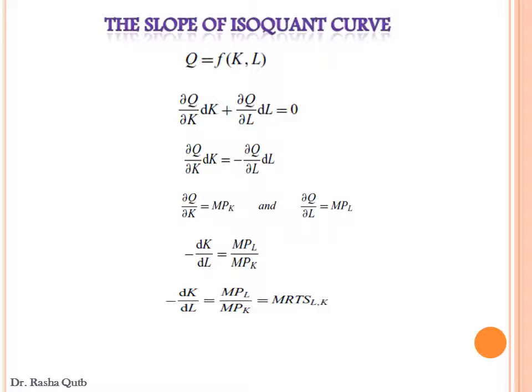The MRTS is the rate at which labor can be substituted for capital to produce the same level of output. It carries a negative sign because in order to use more labor, we must hire less capital in order to maintain the same level of output — since output is fixed along the curve, if we want more units of labor, we must give up some units of capital.